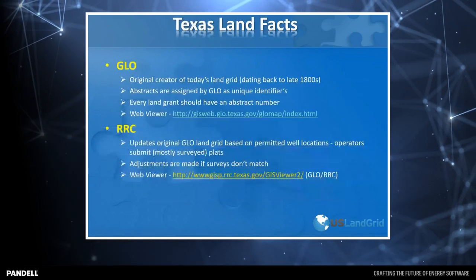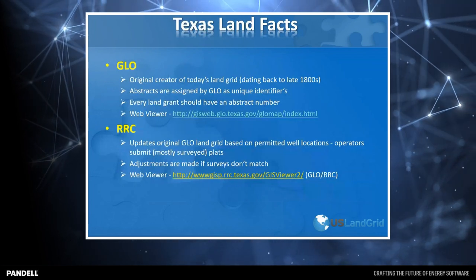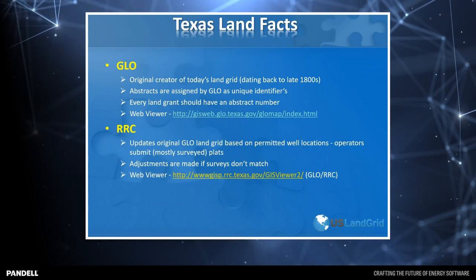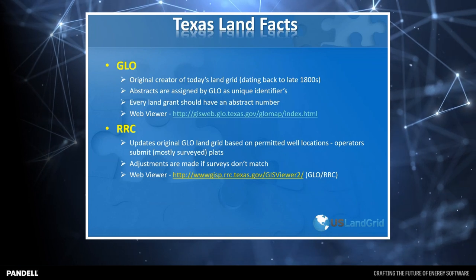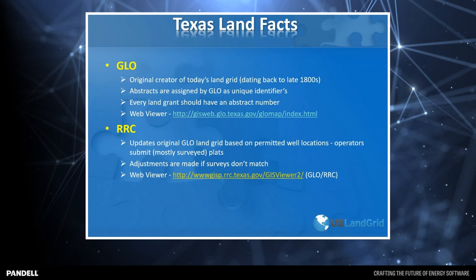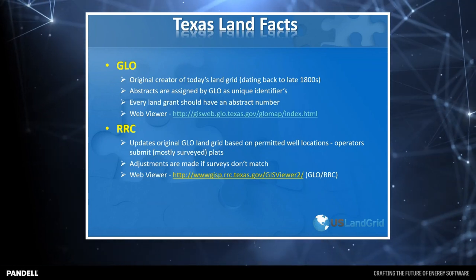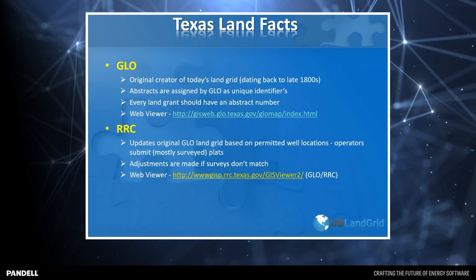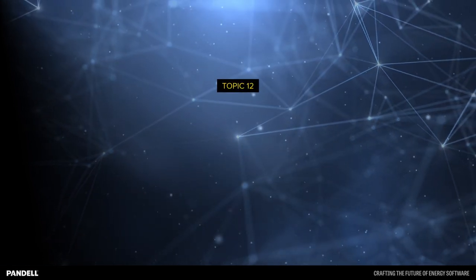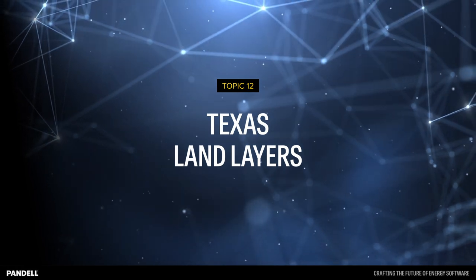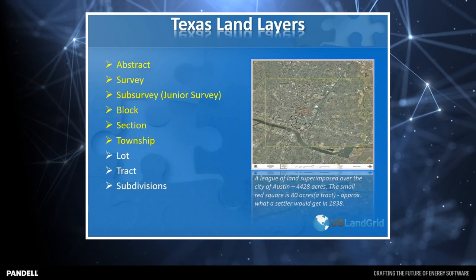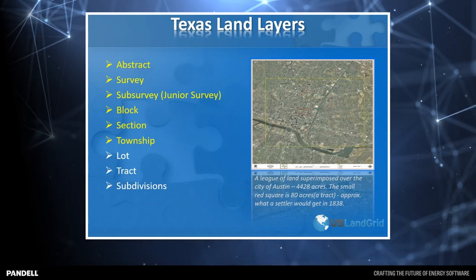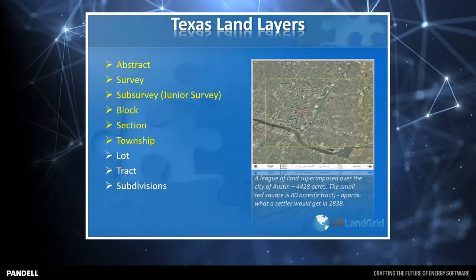Some brief Texas land facts before we delve into the layers: the General Land Office was the original creator. Abstracts are assigned by the GLO as unique identifiers, and every land grant has an abstract number associated to it. The Railroad Commission updates the original land grid based on permits submitted by commercial corporations. Adjustments are made when surveys don't match or when legal decisions have been made in the courts. The main Texas land layers are abstracts, surveys, blocks, sections, and townships, plus junior surveys, lots, tracts, and subdivisions dating back to the early formation of Texas.